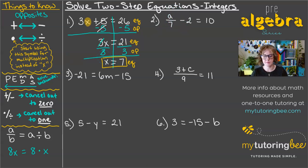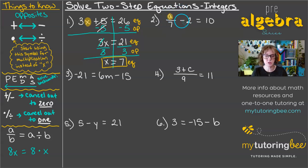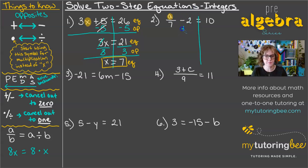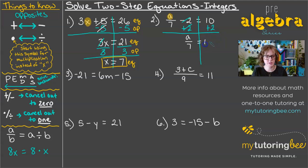In problem 2, we've got variable a. Let's identify what's happening with a: it is being divided by 7 — a fraction is just the same thing as division — and then 2 is being subtracted from that term. We want to undo any addition or subtraction first, so let's undo this subtraction by adding 2. We always want to do the opposite operation. So these cancel out, leaving us with a over 7, and then 10 plus 2 gives us 12.